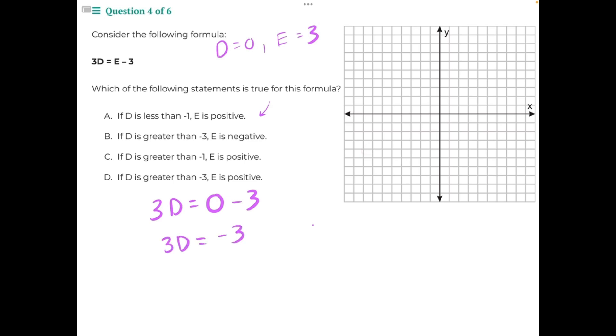3 is being multiplied to d, so if we want to isolate d, we need to do opposite operations to both sides of the equation. 3 divided by 3 will just give us 1, leaving us with d equals negative 3 divided by 3 is negative 1. So when e equals 0, d is negative 1.